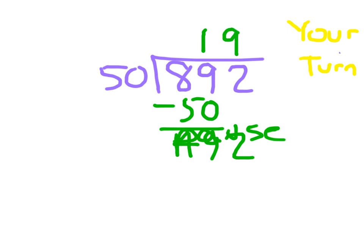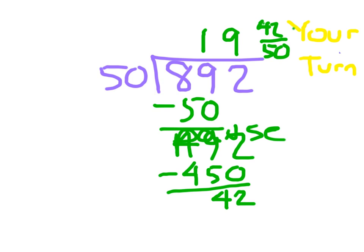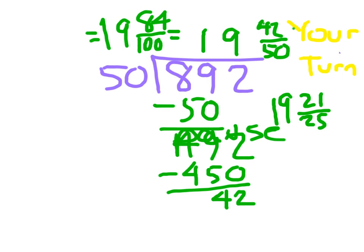492 divided by 50. That's closest to 9, because 9 times 50 is 450. 492 minus 450 is 42, so our remainder is 42. 42 fiftieths. I would have accepted that as an answer, except it's not in simplest form. 19 and 21 twenty-fifths would have been in simplest form. 19 and 42 fiftieths does equal 19 and 84 hundredths, which equals 19.84 as a decimal number.